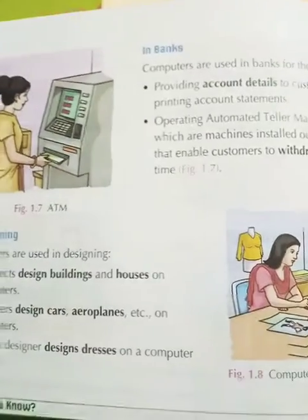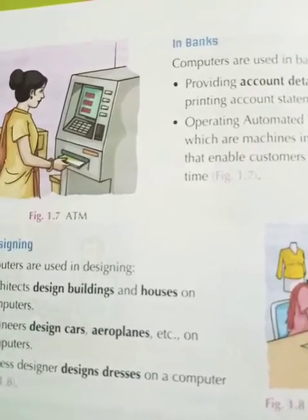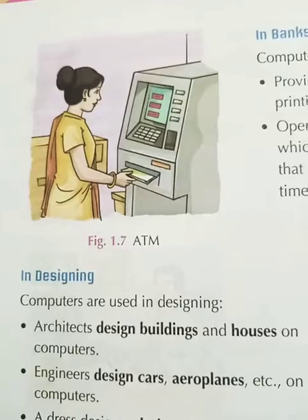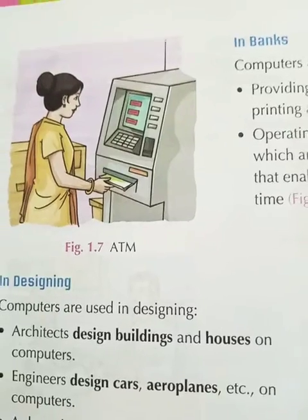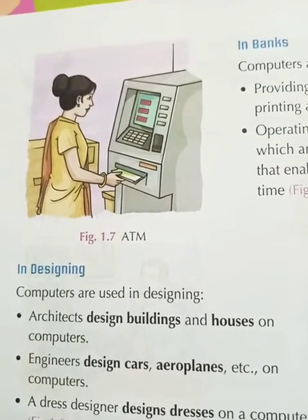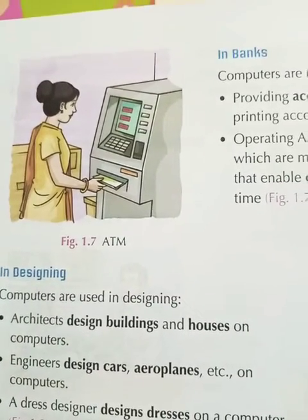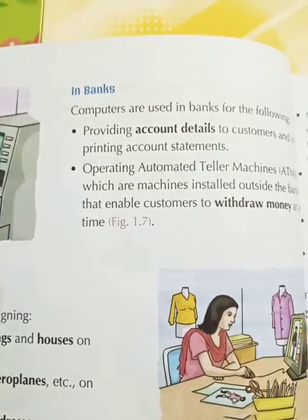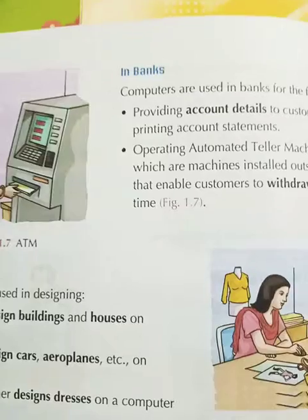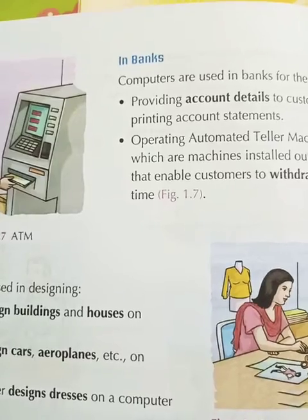Computers are used in banks to keep customers' account details safe, and to generate and print bank statements. Also, this machine you can see is an ATM machine — you all have seen it and your parents use it too. From here we can withdraw money from our account 24 by 7, whether it is day or night. Besides this, there is online banking — you don't need to stand in a line at the bank. From home you can do all transactions: withdraw money, deposit money. You can also pay utility bills like electricity bills, gas bills — all from home.